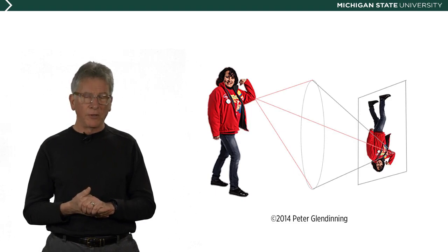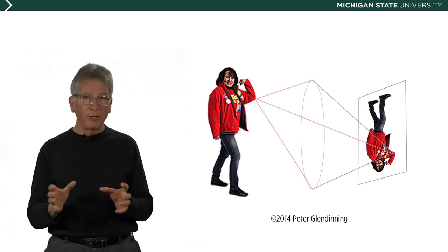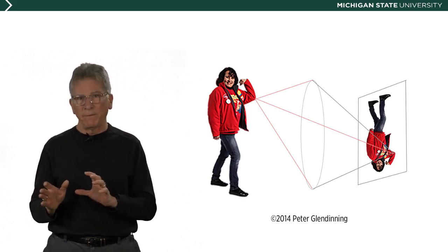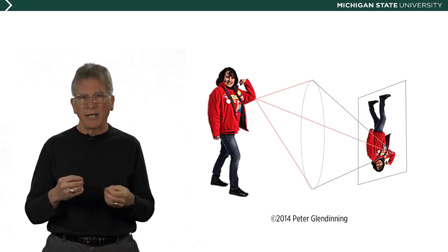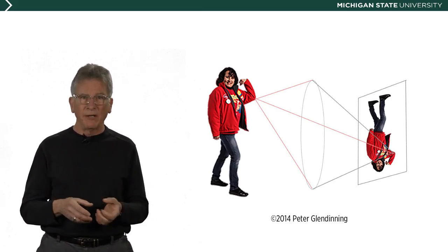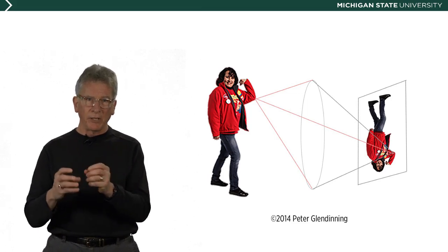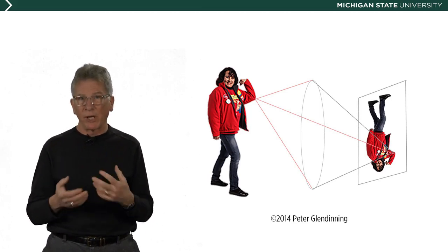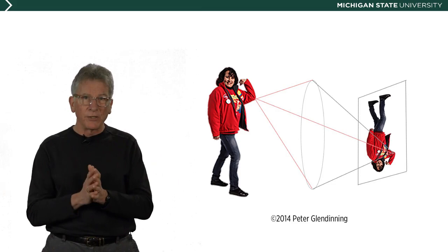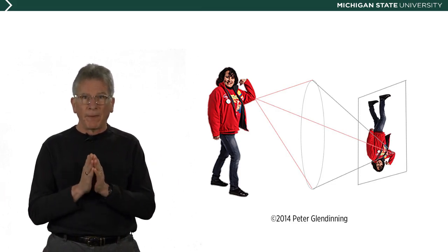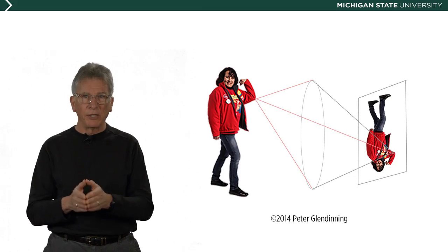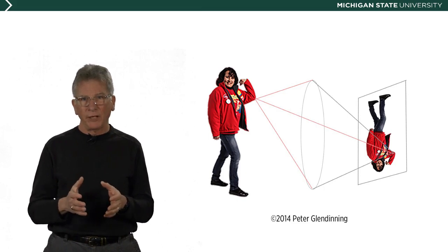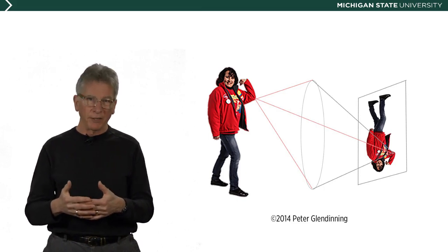Where does the sensor go? The sensor is placed very carefully in your camera on something called the focal plane. We see here a subject on the left whose image is being passed through a lens and focused on the sensor — upside down and backwards, because that's the way a lens renders a subject. That image on the sensor is the essence of our exposure, and the focal plane is the place where the image is focused by the lens.